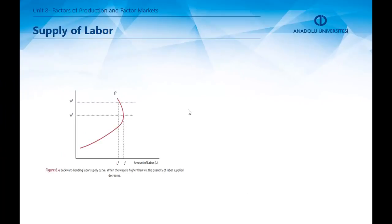Each worker faces a trade-off between work and leisure. If he or she decides not to work at all, they forego the benefits of working — for example, wages — and will have a lot of time but not much money. On the other hand, if she decides to spend her day working, she will not have any time left for leisure activities but will have more money to spend. In that sense, wage is the opportunity cost of leisure for a worker.